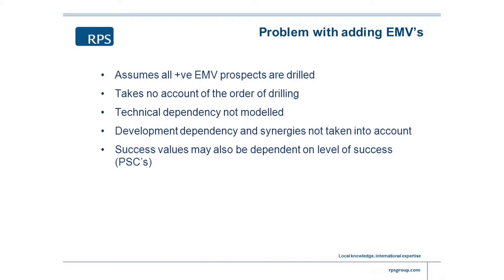Perhaps even more important, doing them all standalone doesn't take any account of development dependency or synergies. If the fields are quite close together, maybe you could tie some of them back, so the incremental value of some of the discoveries could be much higher because you've already got a producing field in the area. And if you're dealing with PSCs, the ring fence for the calculations may well be the entire license area, meaning the value of a barrel changes with the more barrels you find — the state take is going up with the more barrels you discover. There are a lot of reasons why simply adding the standalone values will give you a very pessimistic answer.